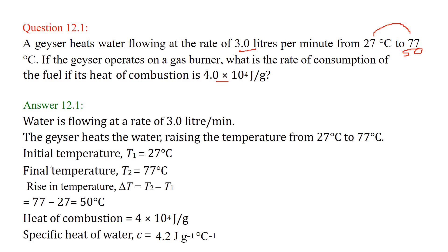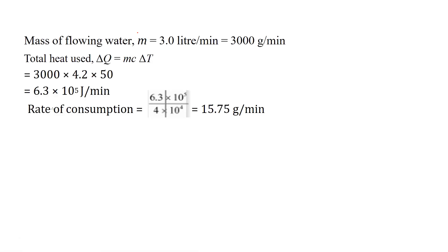Let us write down what is given. Water is flowing at the rate of 3 liters per minute and the geyser heats the water raising the temperature from 27 to 77 degree centigrade. Initial temperature T1 is 27, final temperature T2 is 77, and the rise in temperature T2 minus T1 equals 50 degree centigrade. The heat of combustion is 4 × 10⁴ and the specific heat of water we already know. The mass of flowing water is 3 liters per minute, which converts to 3000 grams per minute.